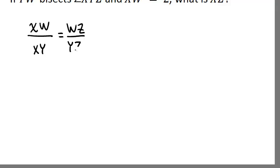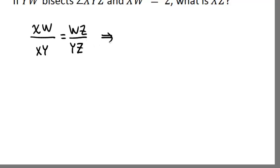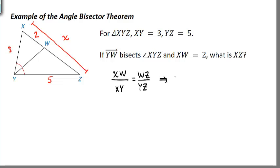When we plug in what we know, XW is 2, XY is 3. WZ we don't know, but we could write an expression for it. If this whole length from X to Z is X, and XW is 2, this remaining segment must have a length of X minus 2, so we can put that in for WZ.